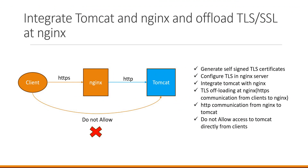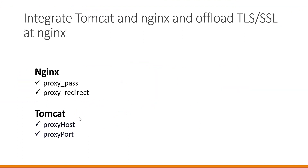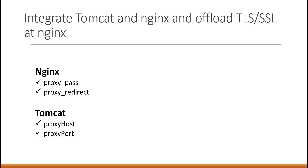One important thing: when clients access Tomcat via Nginx, responses should have proper redirection URLs using the reverse proxy address, not the Tomcat server address. In Tomcat, we set proxy_host and proxy_port to identify the Nginx server's host and port, so URLs are formed using the proxy address instead of the Tomcat address. In Nginx, we use proxy_pass to forward requests and proxy_redirect to ensure clients receive correct URLs from web application responses. We will discuss these directives in detail in another video.